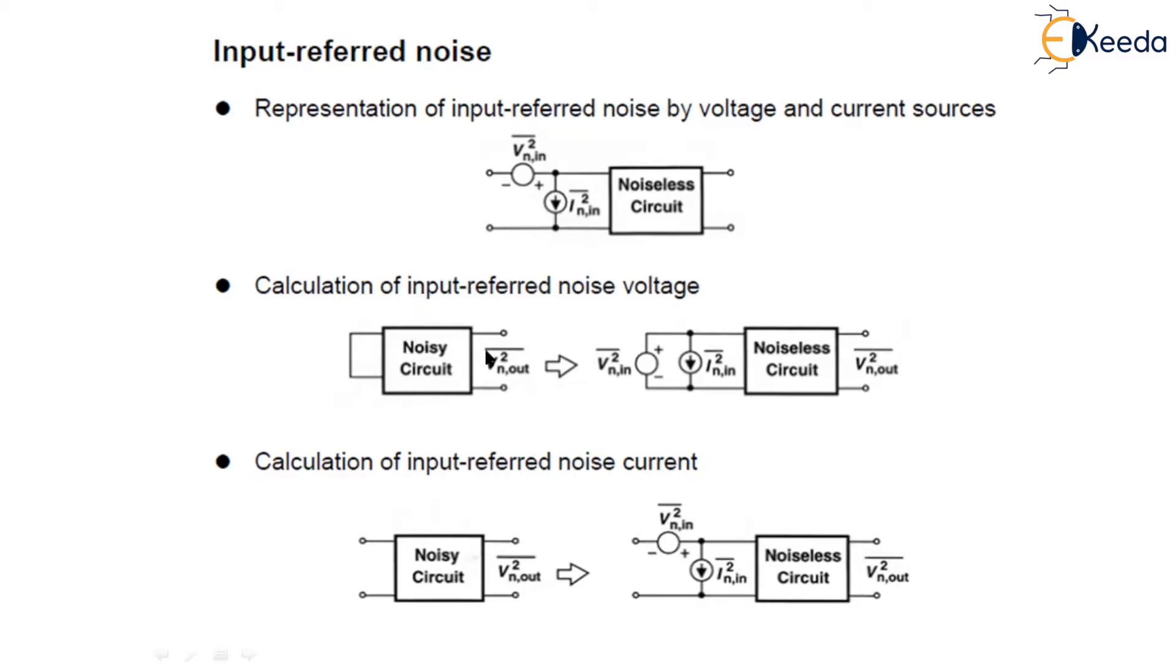Now how can we calculate the input-referred noise voltage? If the source impedance is zero, the current I_n,in² flows through V_n,in² and has no effect on the output, as shown in this diagram.